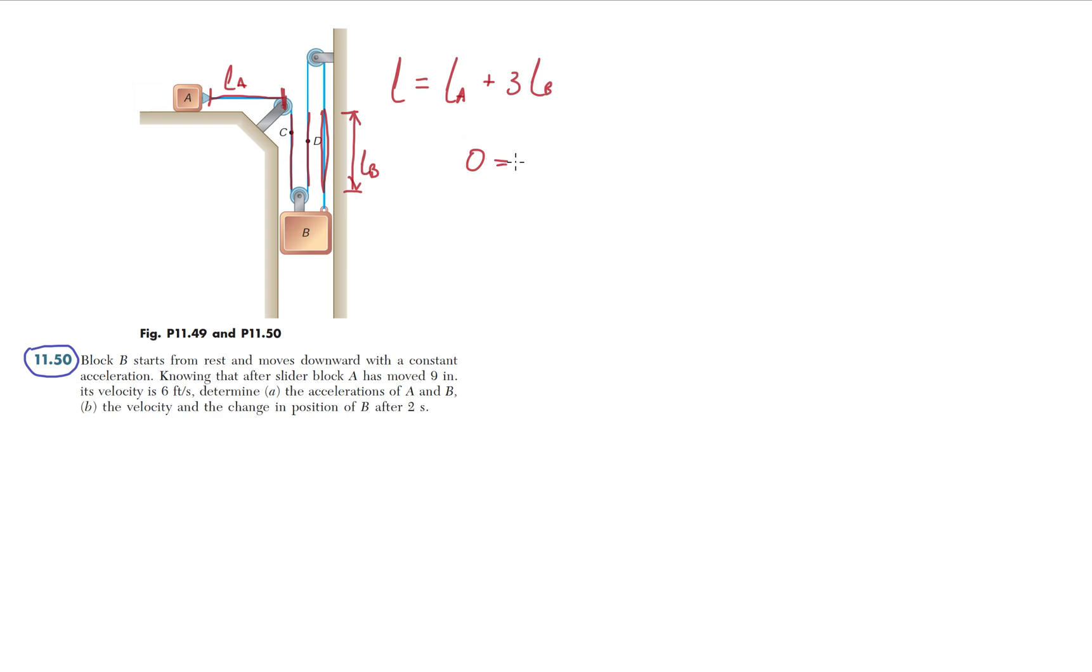Now we're going to take one derivative. L is constant, it's not going to change. So we have V_A plus three V_B, and then the acceleration. And let's just finish this part. So we get A_A is equal to minus three A_B. And as always, I'm going to use my coordinate system like this. This is positive X, this is positive Y.